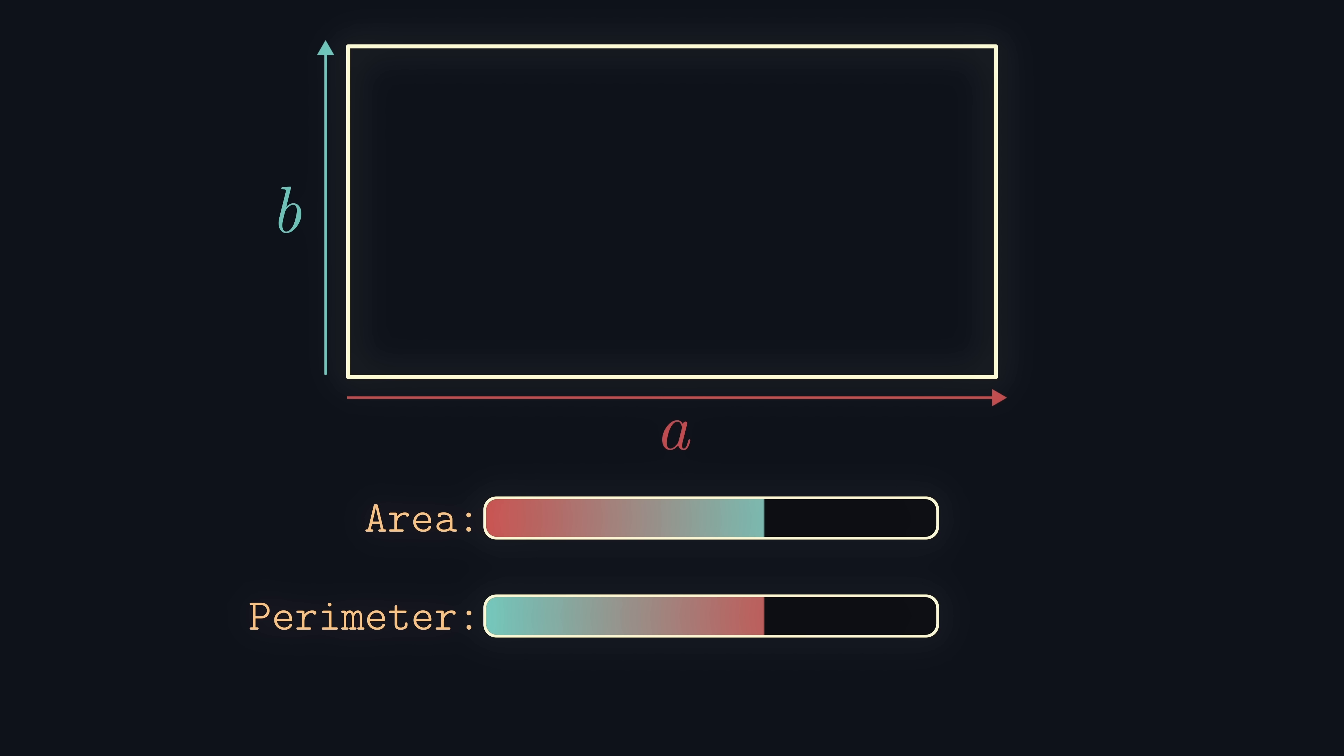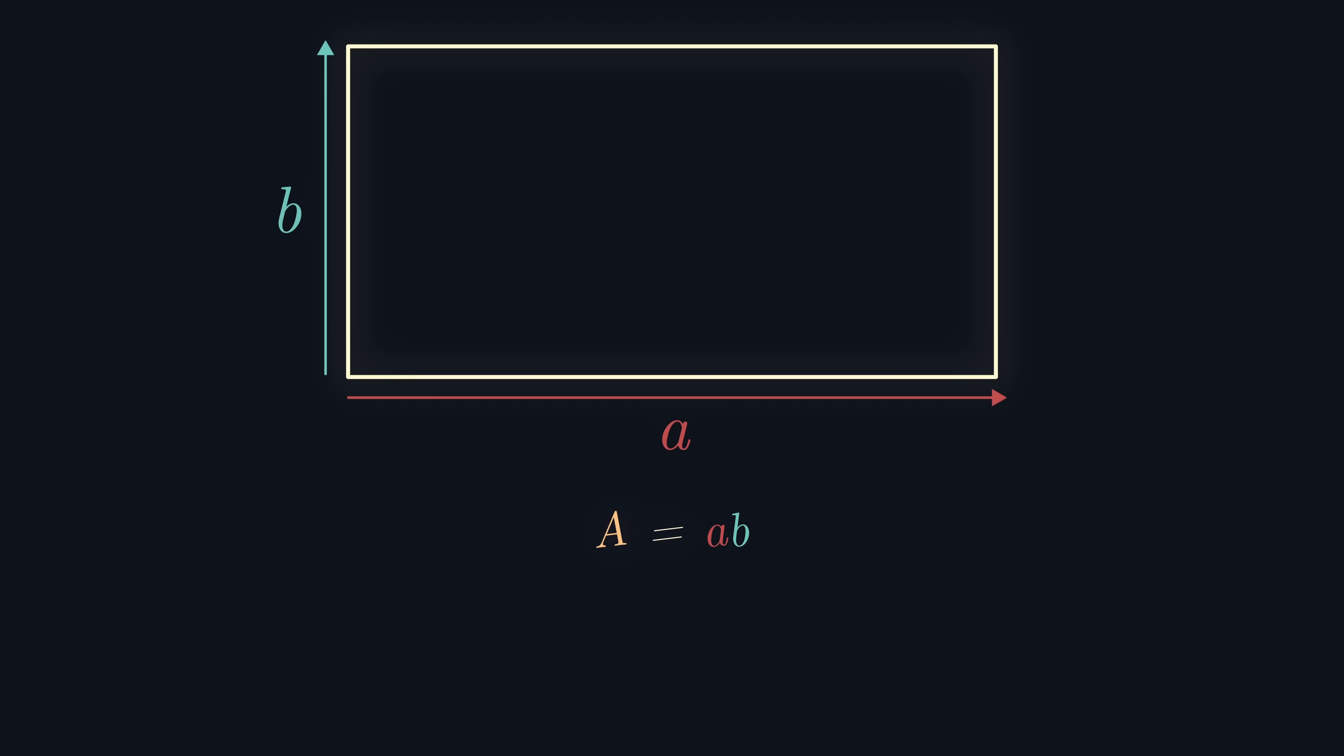First, let's introduce some algebra. Let the side lengths of the rectangle be A and B. Hence, the area is A times B and the perimeter is 2A plus 2B. Setting the area equal to the perimeter, we get that AB equals 2A plus 2B.